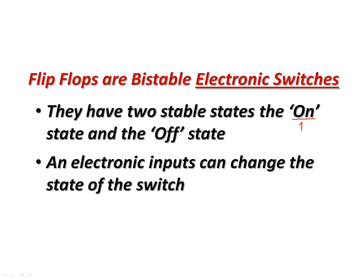The on state in digital electronics is called a logic 1 and the off state in the digital electronics is called as logic 0. And the change of state can take place by giving an input electronic signal which will change the state from on to off for a digital circuit.